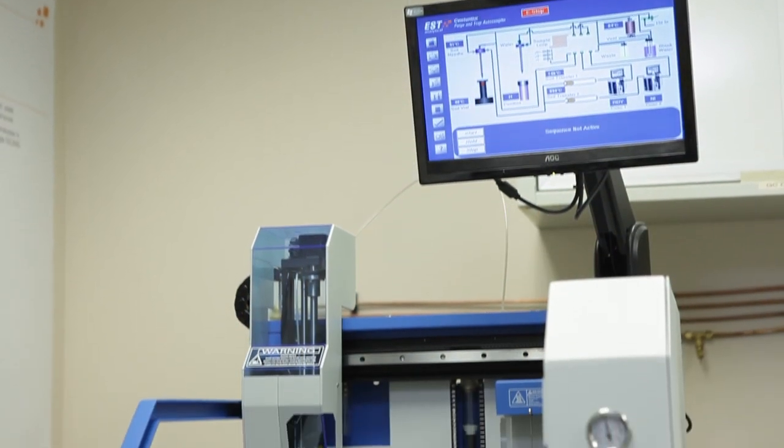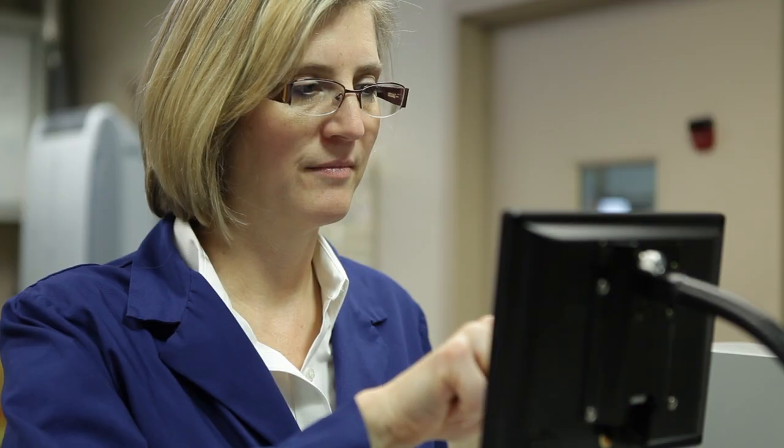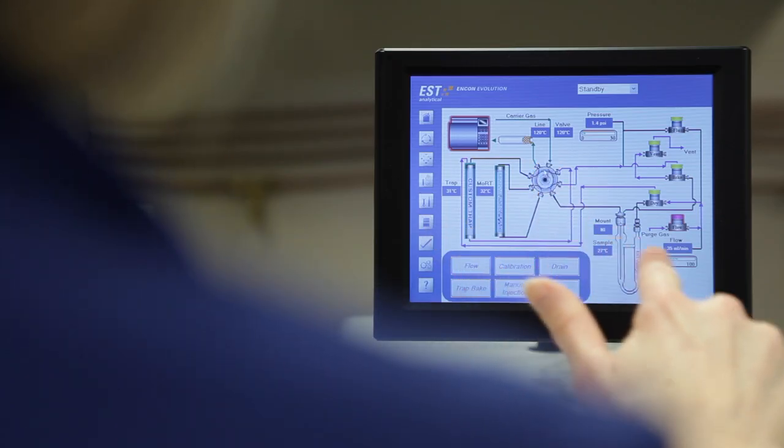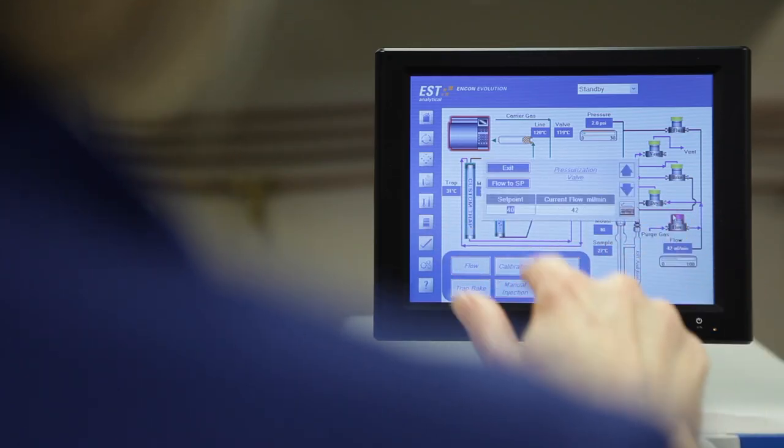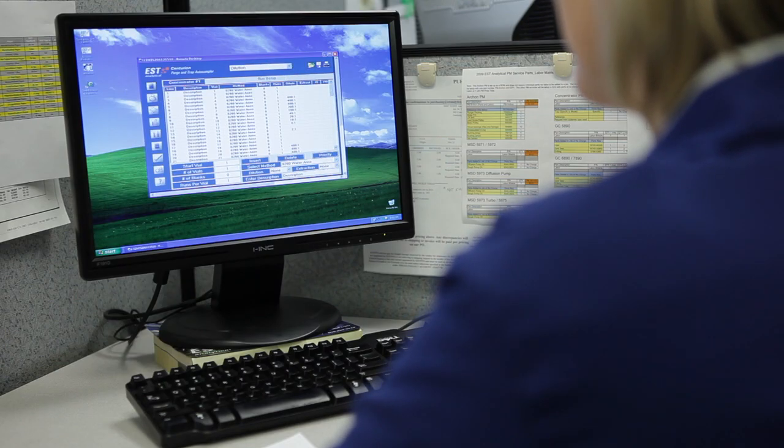We also have a syringe option for dilutions up to 400 to one. The Centurion and ENCON EV both utilize an onboard operating system and graphical interface that can be run from the instrument or from the PC controlling your GC or GCMS.